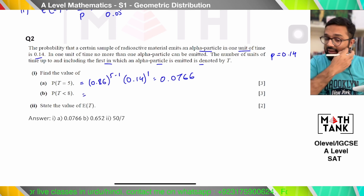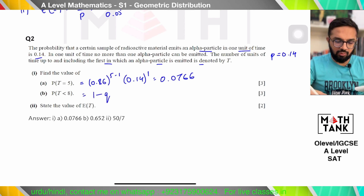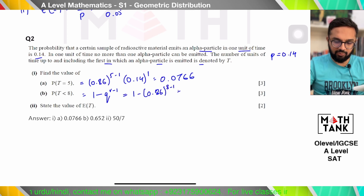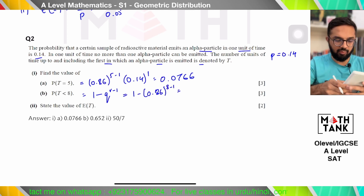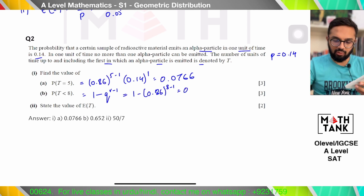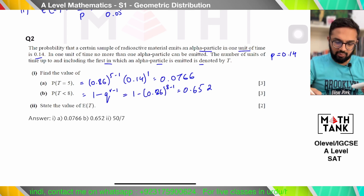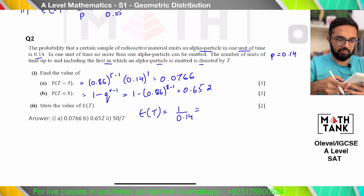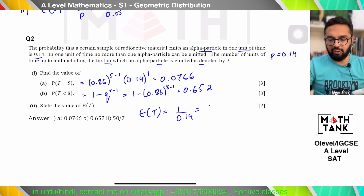For P(T < 8): the formula is 1 − q^(r−1), so 1 − 0.86^7, giving 0.652. The expected value of T is again 1/p = 1/0.14, which is 50/7.